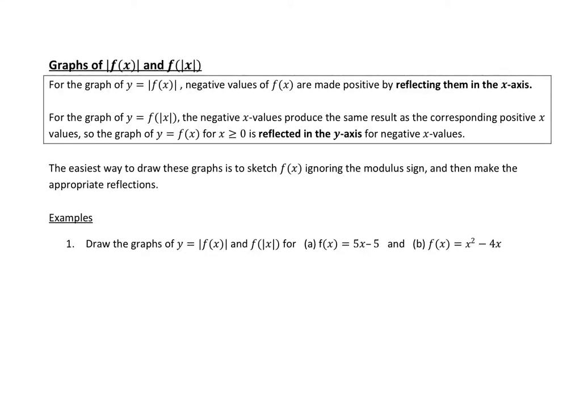In this video we're going to look at the graphs of modulus f(x) and also f(modulus x) and see how they are different. For the graph of y = |f(x)|, negative values of f(x) are made positive by reflecting them in the x-axis. Reflecting in the x-axis means you're reflecting vertically.